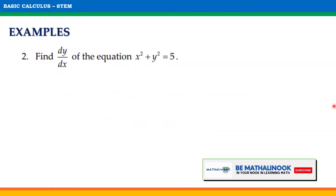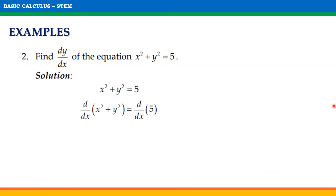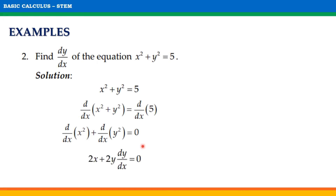For the second example, find dy/dx of the equation x² + y² = 5. For our first step, get the derivative of both sides of the equation. Thus, we will have d/dx of x² + y² equals d/dx of 5, which gives us d/dx of x² plus d/dx of y² equals 0. The derivative of x² is 2x and the derivative of y² is 2y dy/dx.